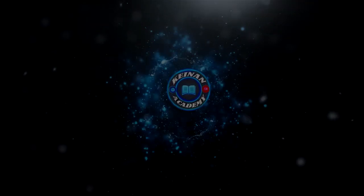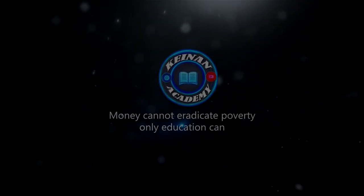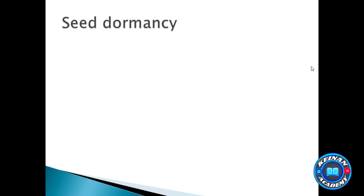We will continue the topic of growth and development. We previously covered growth in plants, the graphs used in growth, growth in animals, germination, conditions necessary for germination, the structure of a seed, and types of germination including ABG and IBG germination.